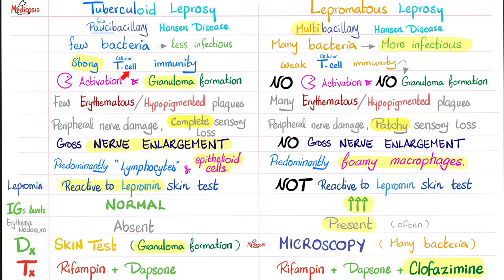If my T cell immunity is strong, I can activate the macrophages, the epithelioid histiocytes, and make a granuloma — therefore you can diagnose it by the lepromin skin test, which is analogous to the tuberculin skin test of tuberculosis. But in lepromatous leprosy, I could not activate the epithelioid cells, I could not make a granuloma, therefore I cannot use a skin test. Since there are many bacteria, look under the microscope using an acid-fast stain — it's an acid-fast bacillus known as Mycobacterium leprae.